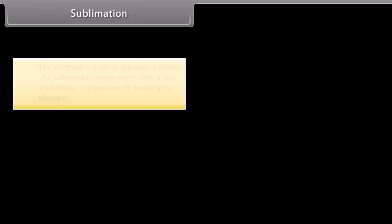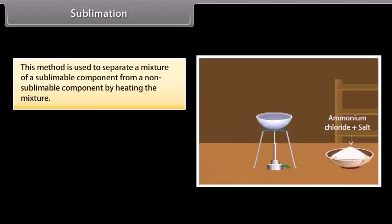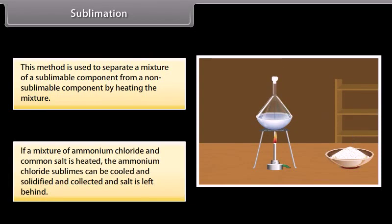Sublimation: This method is used to separate a mixture of sublimable component from a non-sublimable component by heating the mixture. If a mixture of ammonium chloride and common salt is heated, the ammonium chloride sublimes, can be cooled and solidified and collected, and salt is left behind.